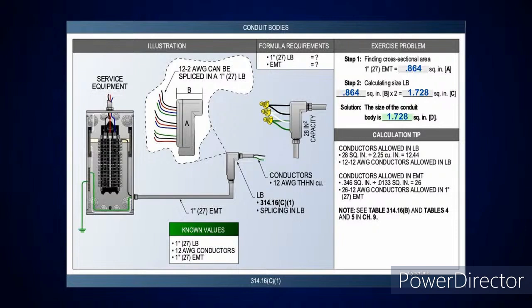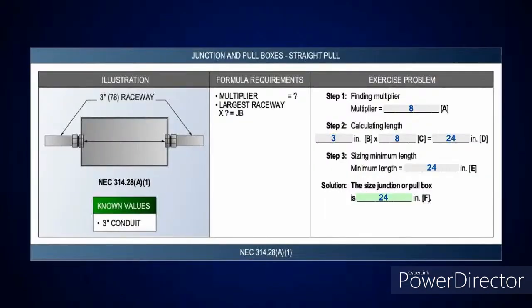In the illustration, the LB has 28 cubic inches of capacity — we give you the information and then show you how to do the calculation. This is not necessarily going to be on the journeyman exam, but we're showing you the math you'll use. It prepares you for any situation where they ask that style question. This calculation — how many conductors you can put in a conduit body — would probably be something for a master's exam. But as a journeyman, you need to know it because you're out in the field.